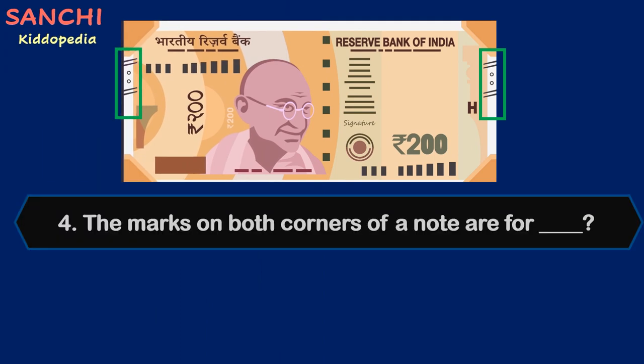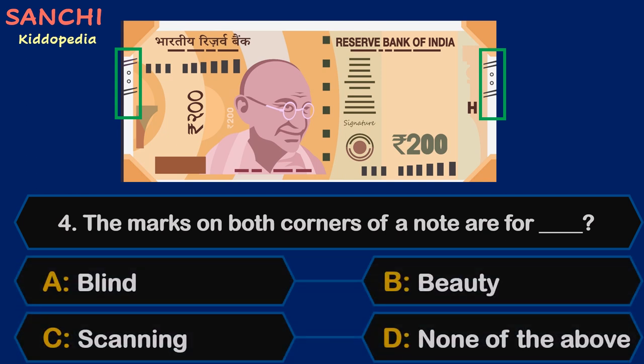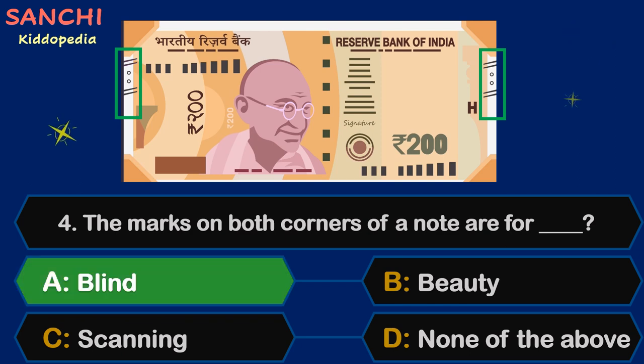Question 4. The marks on both corners of a note are for — your options are: A. Blind, B. Beauty, C. Scanning, or D. None of the above. Your time starts now. And the answer is A. Blind.